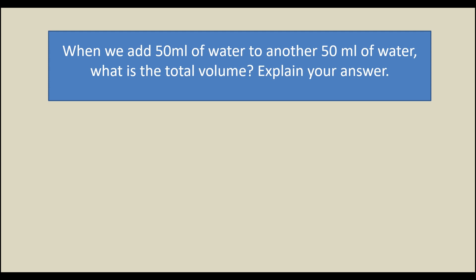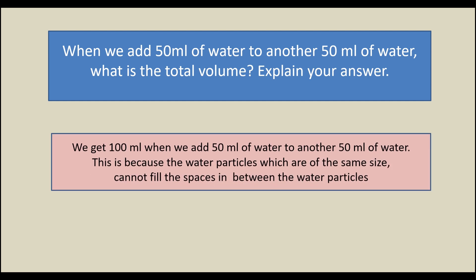When we add 50 ml of water to another 50 ml of water, what is the total volume? We get 100 ml. This is because the water particles, which are of the same size, cannot fill the spaces in between the other water particles.